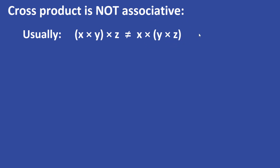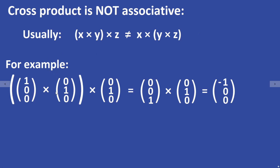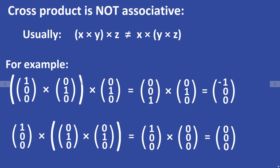To see this, consider the following example. This cross product equals the vector (0, 0, 1) and this one equals the vector (−1, 0, 0). Now changing the position of the bracket, this cross product equals zero, and this cross product equals (0, 0, 2). These two results are not the same, confirming that the cross product is not associative.